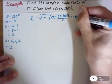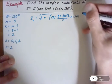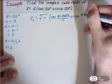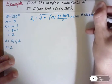Plus i sine of that same quantity, theta plus 360k over n.